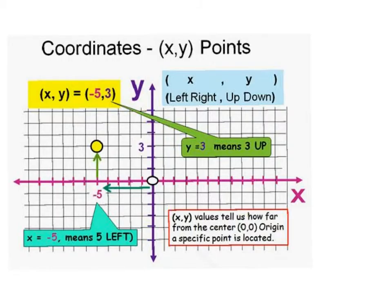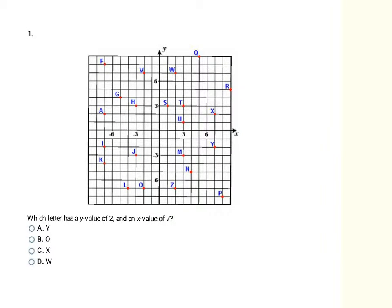This problem gives us a bunch of points and asks which one has a y-value of 2 and an x-value of 7. They didn't write it as a coordinate pair — they described it in words. If I write this as a coordinate pair it would be 7, 2, because the x-value is always first. So on the x-axis I go over to positive 7, and then the y-value is 2, so I go up 2. That puts me right at the letter X, so my final answer is X, which is choice C.